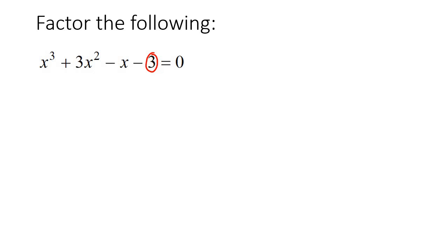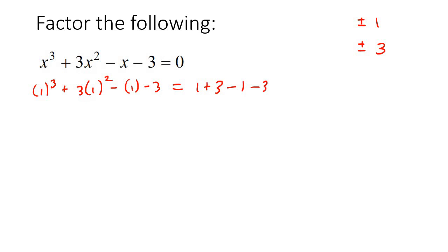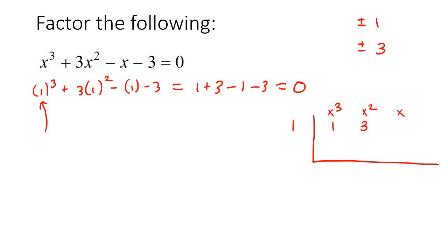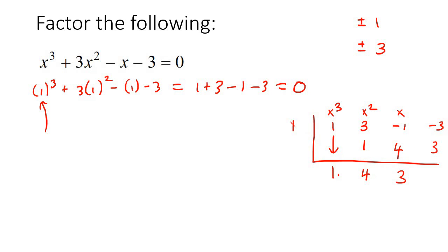The factors could be positive or negative 1 and positive or negative 3. Starting with positive 1 — go plug that into all of the x's places. That gives us 1 plus 3 take away 1 take away 3, which is 0. So then you use synthetic division with that number. You've got 1, then a 3, a negative 1, and a negative 3. Bring this 1 down — 1 times 1 is 1, add these to get 4; 1 times 4 is 4, add these to get 3; 1 times 3 is 3, add them to get 0. This becomes x squared, this one becomes x. So then what we have is x squared add 4x add 3 equals 0.